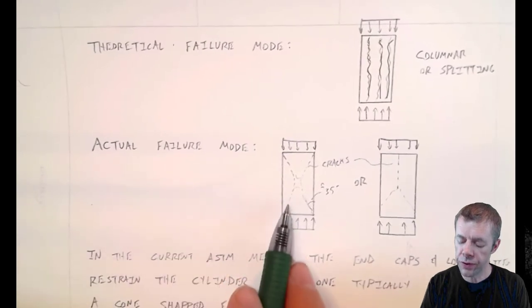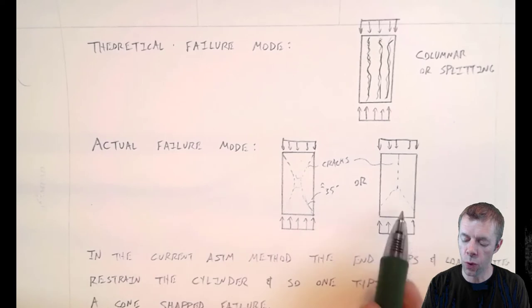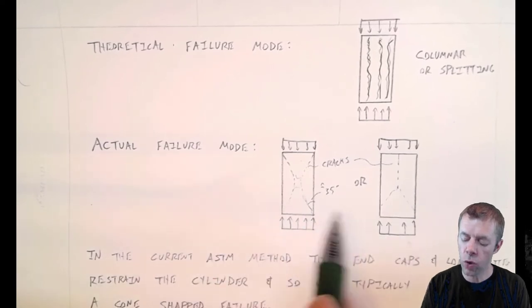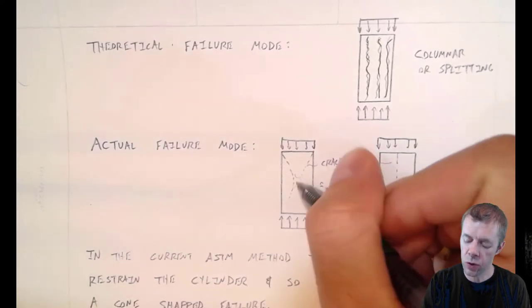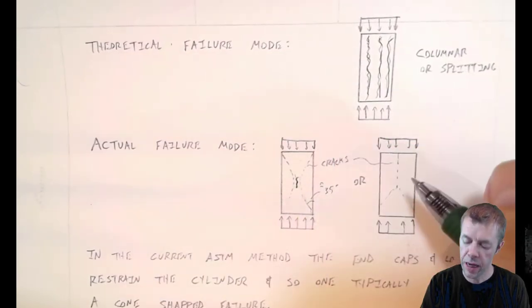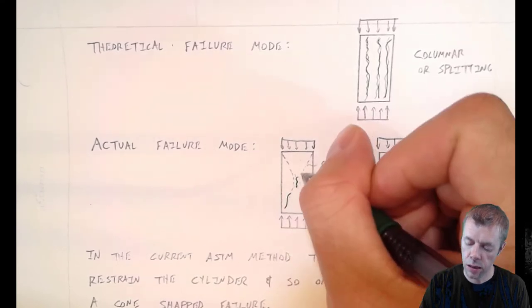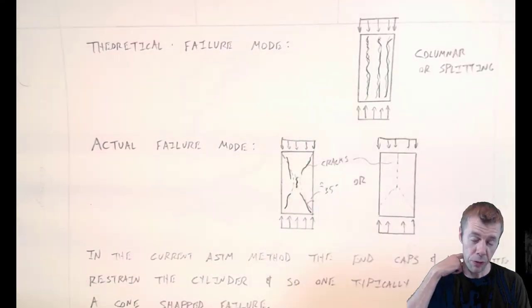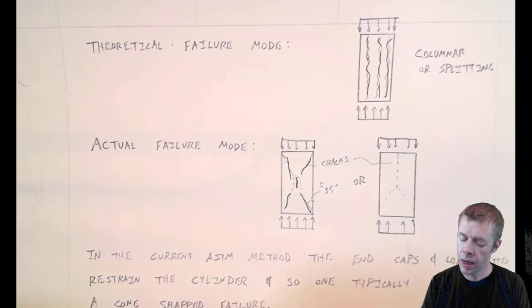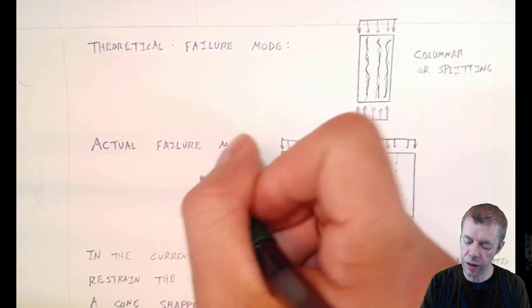When you're loading these concrete cylinders, they typically fail like this or this. Typically, as you're loading them, you'll see a small crack that will occur in the center and then that crack will extend. And then the sample fails.